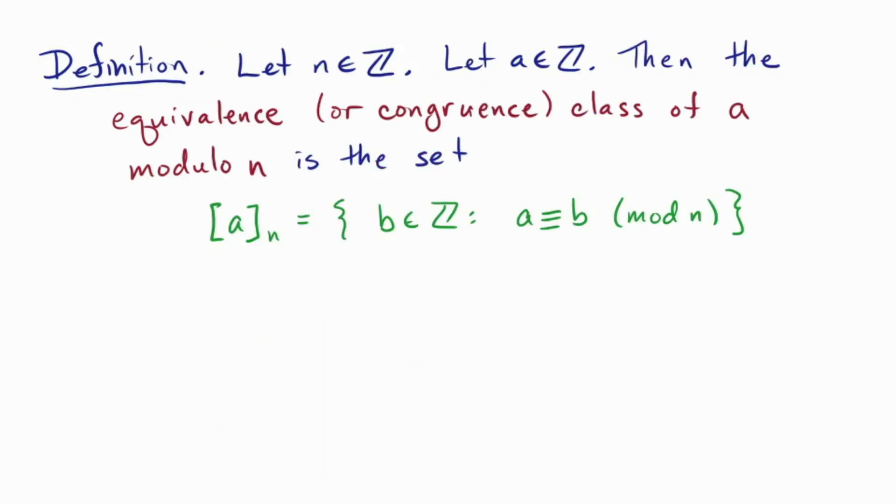Now we can define the rays as objects in their own right. Definition. Let n be an integer. Let a be an integer. Then the equivalence, or congruence, class of a modulo n is the set, which we denote with these square brackets right here, the set of b in the integers, such that a and b are equivalent mod n. Here I'm setting the square bracket notation as a shorthand for the whole ray, or the collection of integers. I've used set builder notation to describe the ray as a collection of integers which are congruent to the element a.